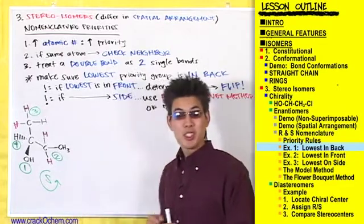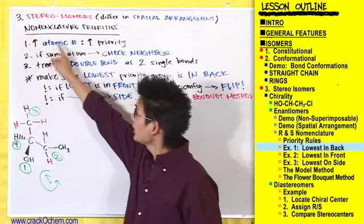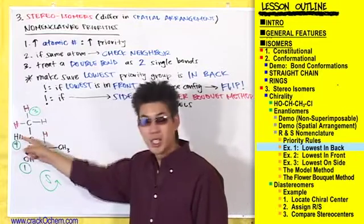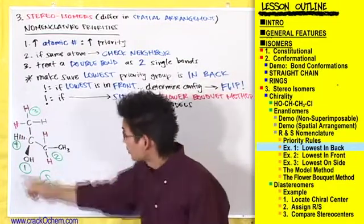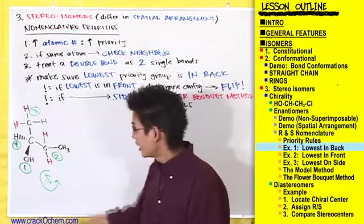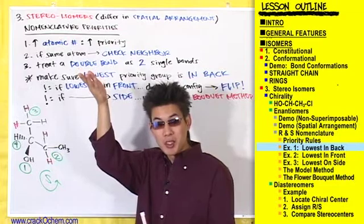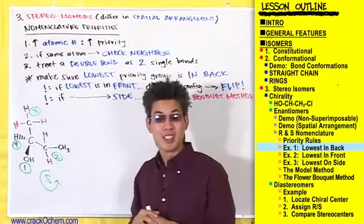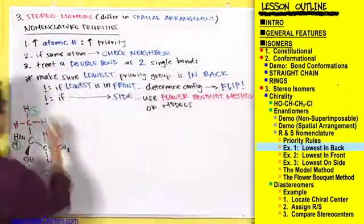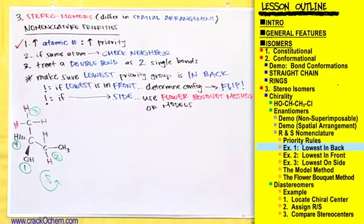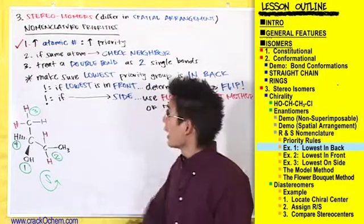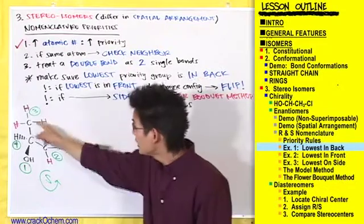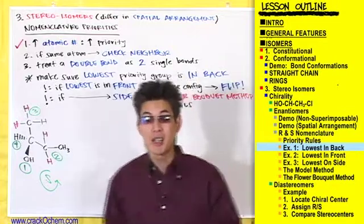This example illustrated a couple of things. First, the higher the atomic number of a substituent, the higher the priority it gets — that's why hydrogen, with the lowest atomic number, received priority four, and oxygen, with the highest atomic number, received priority one. Second, when two substituents have the same atom at the first position, you must check their neighbor atoms, as we did with the two carbon substituents.